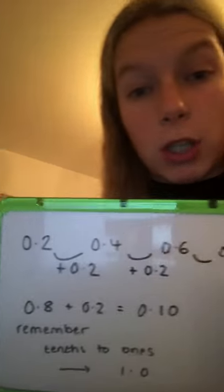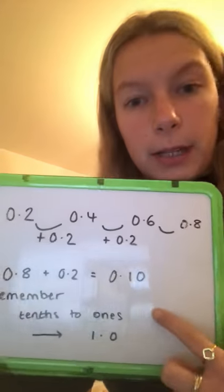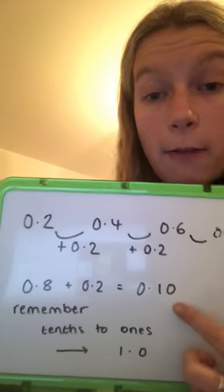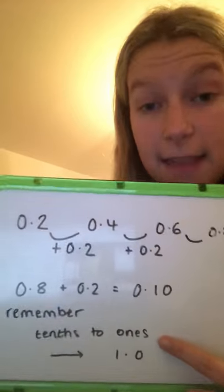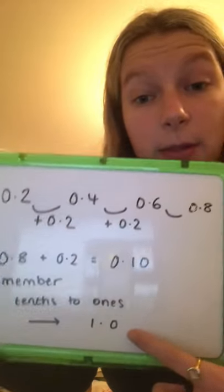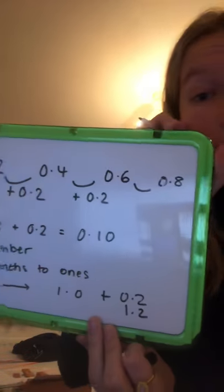0.8 plus 0.2 looks like it will equal 0.10, similarly as 8 plus 2 equals 10. However, we need to remember that tenths go to ones once they reach past nine. So this value is actually 1.0. After 1.0, the value would equal 1.2, not 1.12 as the students might have perceived when they did this correction.